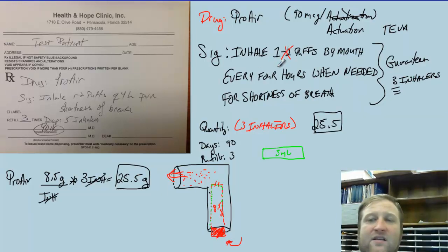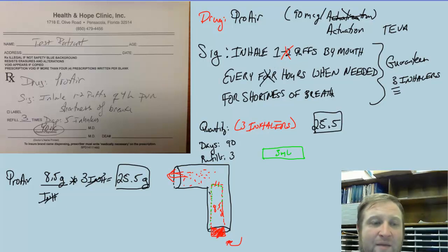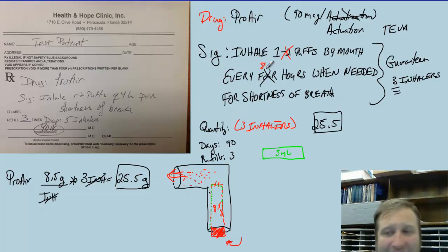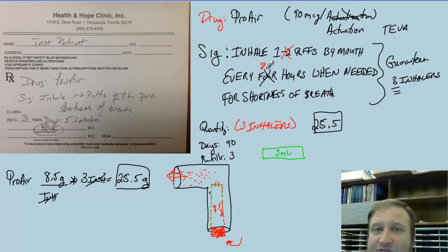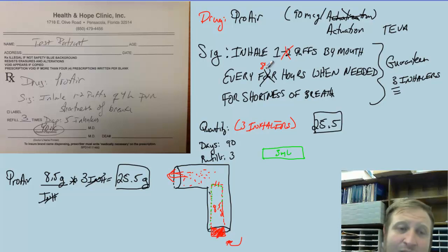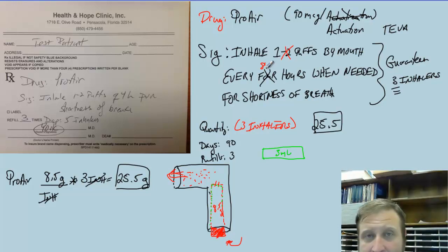If the provider says inhale one to two puffs by mouth every eight hours — if it's every eight hours — then they would only get one inhaler for every three months. So they would get even less. Just be cognizant about that. The max they will send is three inhalers per shipment.